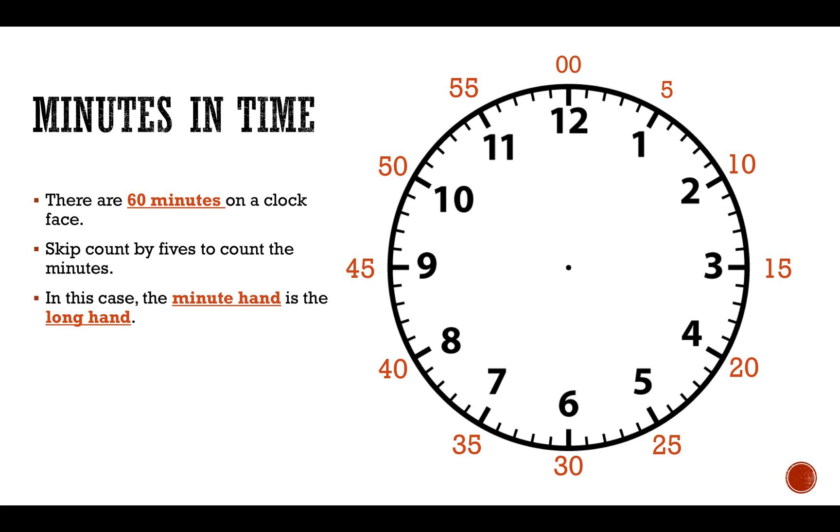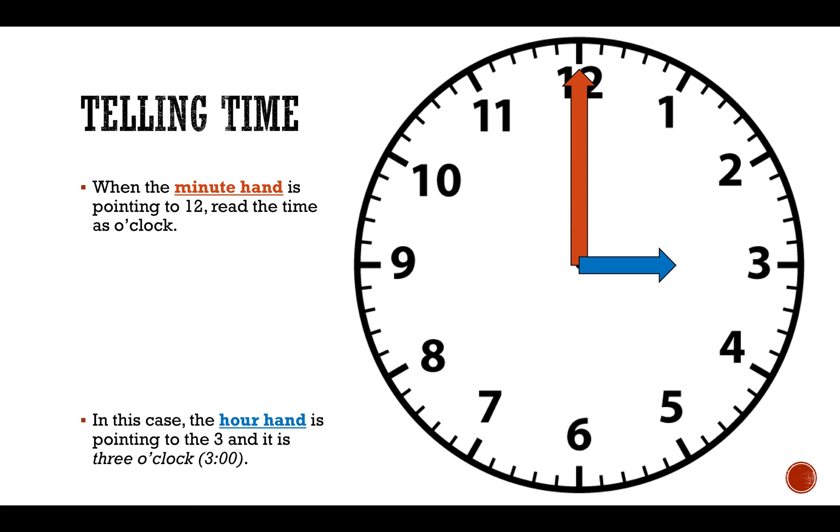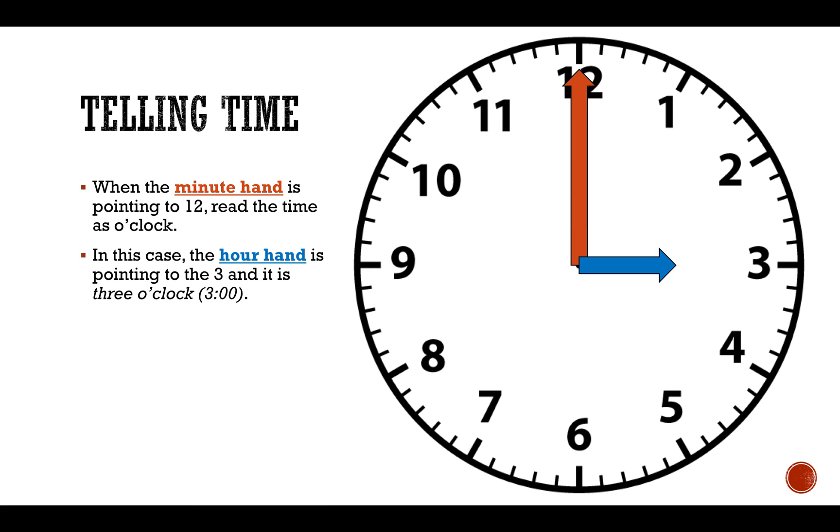In this case, the minute hand is the long hand. Now let's tell time. When the minute hand is pointing to 12, read the time as O'clock. In this case, the hour hand is pointing to the three and it is three O'clock.